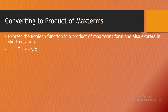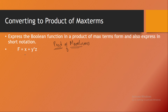Now let's take another problem and bring the same function f = x + y-dash z into product of maxterms format. First I need to bring this function into product format, then express it in terms of maxterms. Applying the distributive law to x + y-dash z gives us (x + y-dash) into (x + z). We've now brought the function into product format. I can consider this as term one and term two.